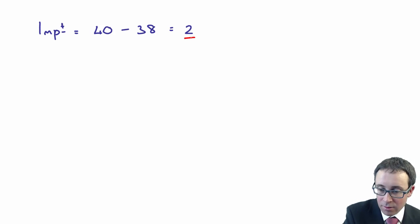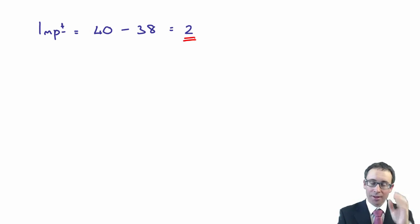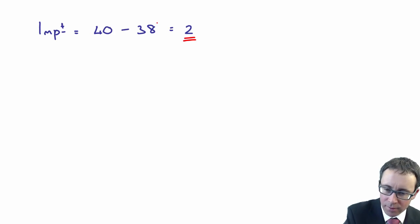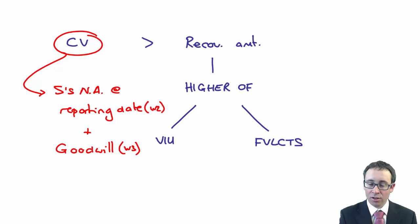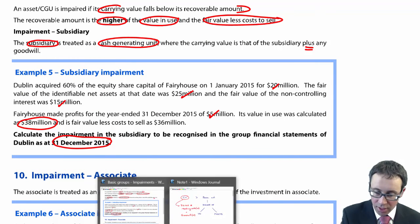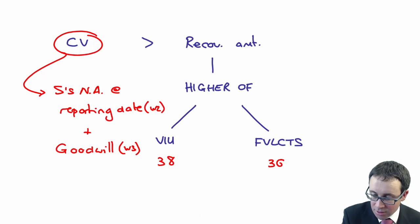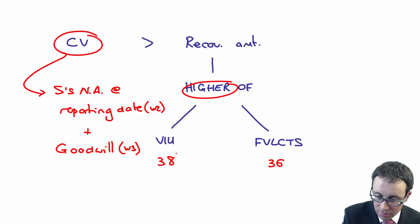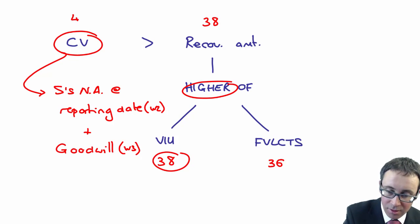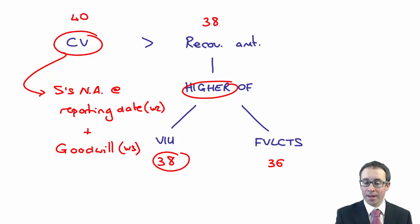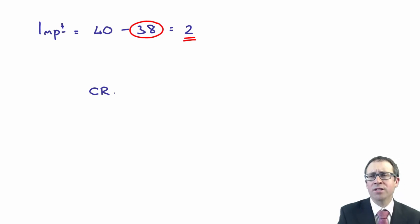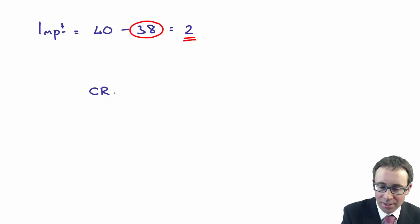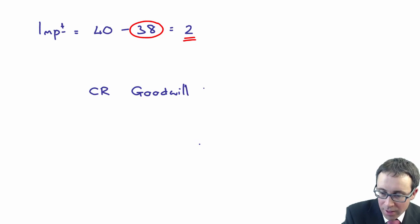The impairment for the year is £2 million. The recoverable amount is £38 million — value in use £38 million versus fair value less cost to sell £36 million — so the higher is £38 million compared to the carrying value of £40 million, giving a difference of £2 million. Although we weren't asked to process the adjustment, with a cash generating unit, the impairment goes to goodwill first. There are no specific assets mentioned, so we credit goodwill with the £2 million.